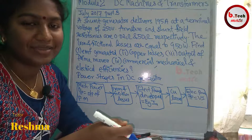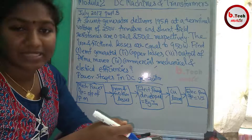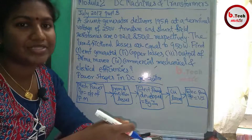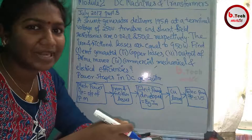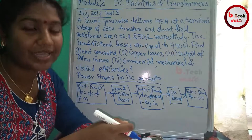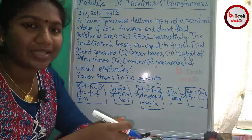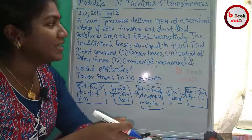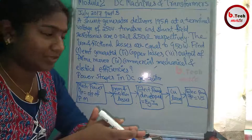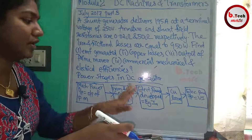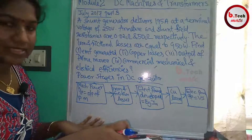The next problem we are going to talk about is Part B from July 2017. We have a problem, and we need to take a solution. We need to find the power stages in a DC generator. The DC generator involves power stages — that means it is mechanical.